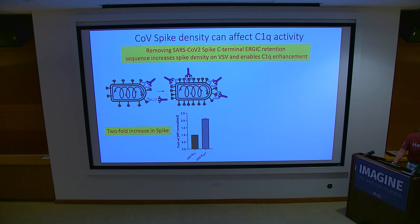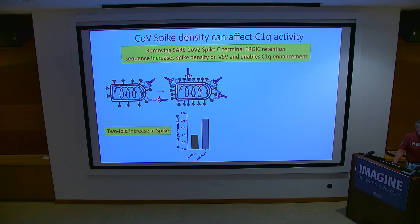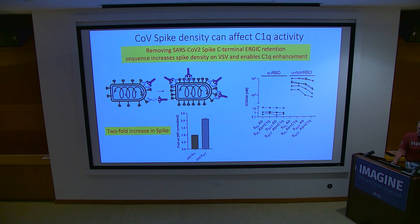What Yvonne did very cleverly was ask: what does C1Q do with anti-spike antibodies? Using a VSV pseudovirus system where you can control the density of the spike on pseudovirions by removing the ER-Golgi retention sequence — removing it gives a denser spike on the surface. On the SARS-CoV-2 virion, the spikes are really far away from each other, making it unlikely C1Q can bridge effectively.